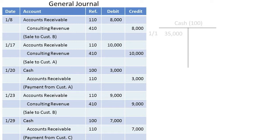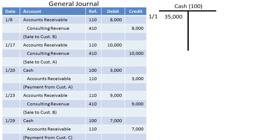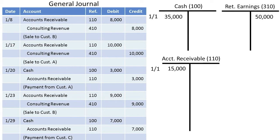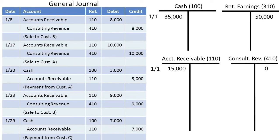Imagine we start the month with a debit of $35,000 of cash, a debit of $15,000 of accounts receivable, a credit of $50,000 of retained earnings, and a credit of consulting revenue of zero. If we were to then take these general journal entries and post them into their general ledger accounts, we could compute the balance of each individual ledger account.